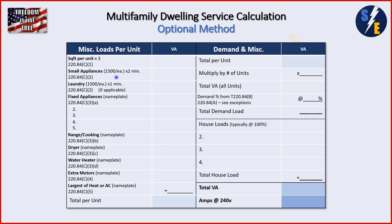Then we add small appliance circuits — there are two minimum required. We do our laundry if it applies; some multifamily dwellings don't have laundry provisions in each unit, so we'd leave that blank, but if there is laundry we put the value here. Then we list our fixed appliances at nameplate. Then range and cooking at nameplate, and dryer at nameplate. Remember: with the optional method you do NOT use range table 220.55 or dryer table 220.54 — those are for the standard method only. You only use nameplate for the optional method.